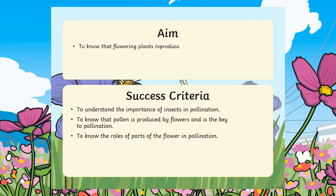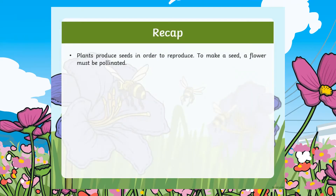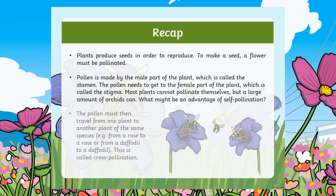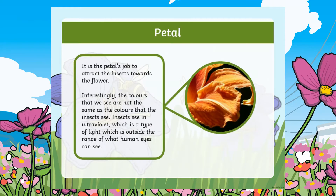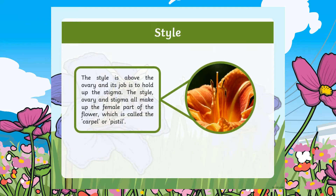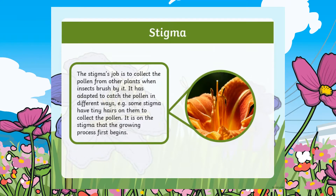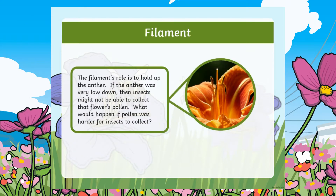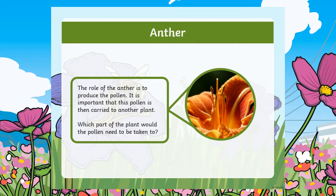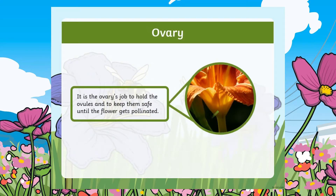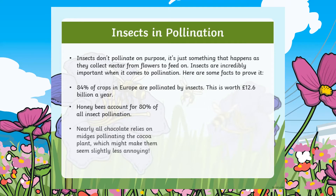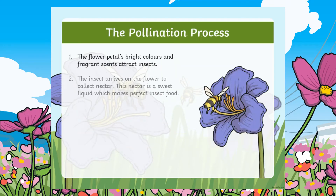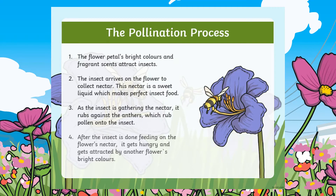Begin by showing learners our pollination PowerPoint. This talks learners through the different parts of a plant, then insect, wind and self-pollination, finishing off with a quiz for learners.